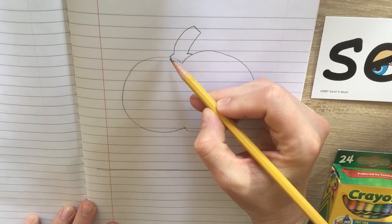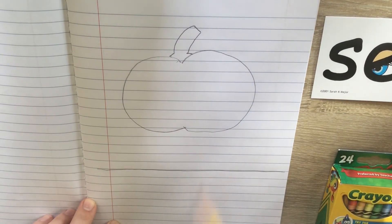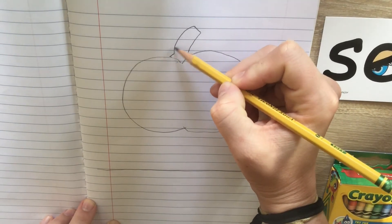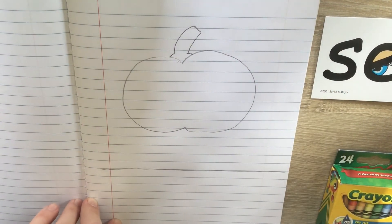Sorry, I got cut off there. So we are going to add a little line on the left and a little line on the right, and then slant up to make a stem. The stem is almost like a bent rectangle.